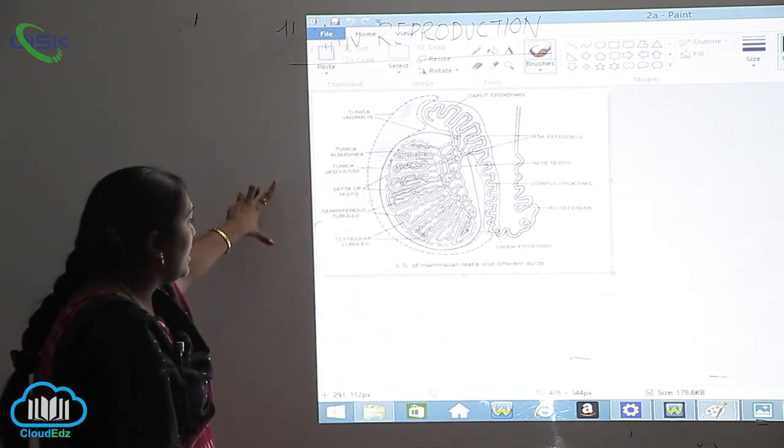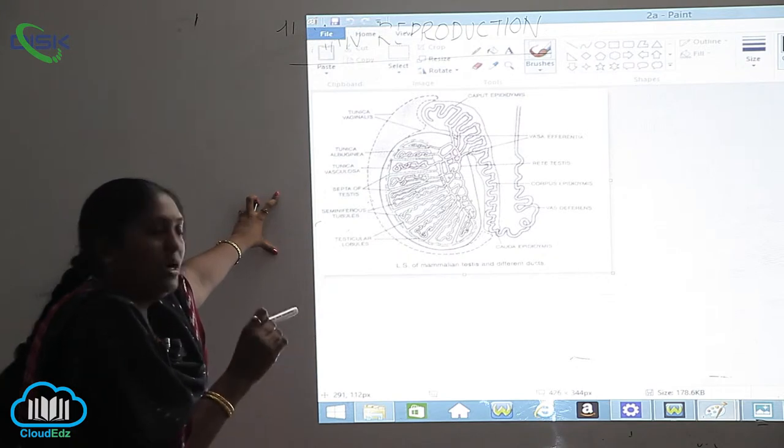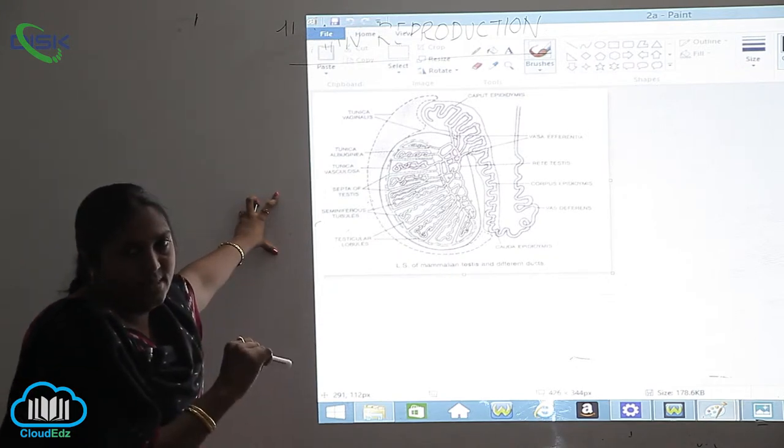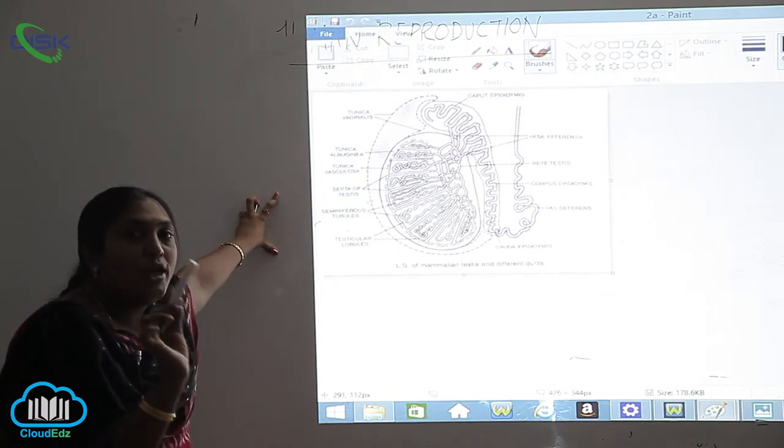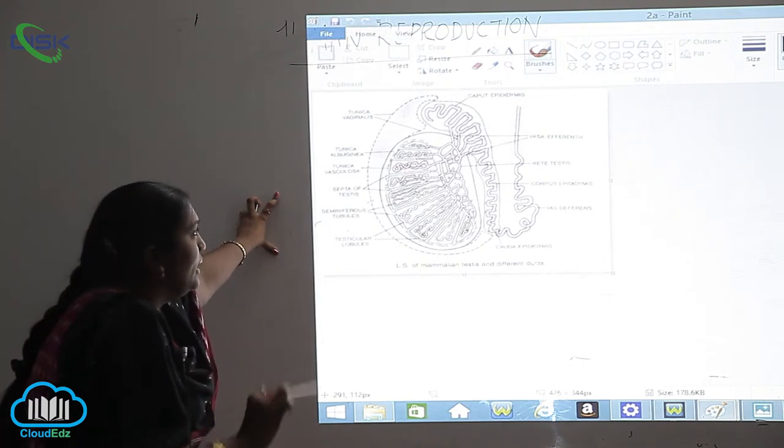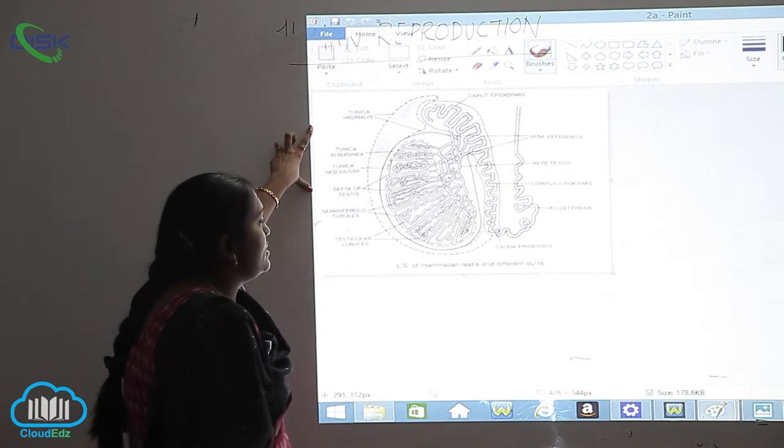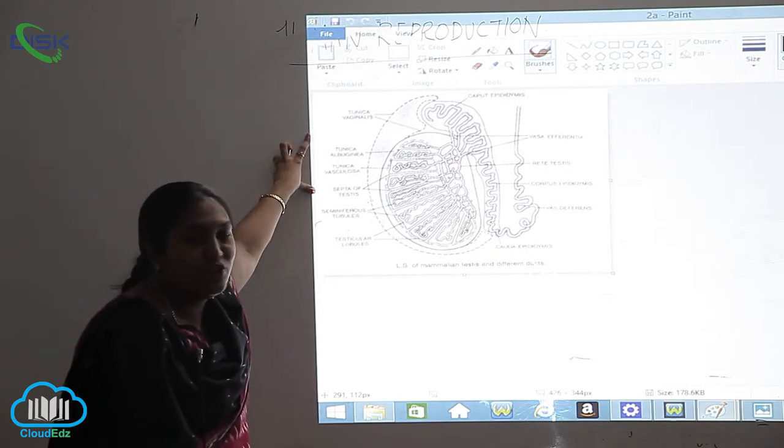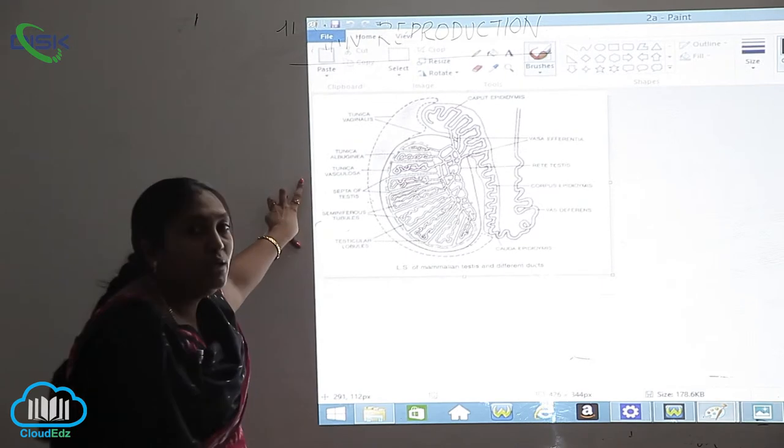Now let us see what is the structure of testes. If you see the longitudinal section of the mammalian testes, the diagram is like this. You can only see through the microscope.